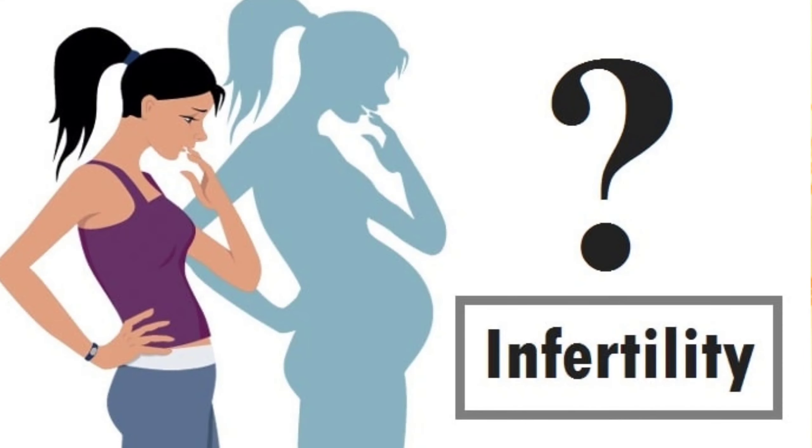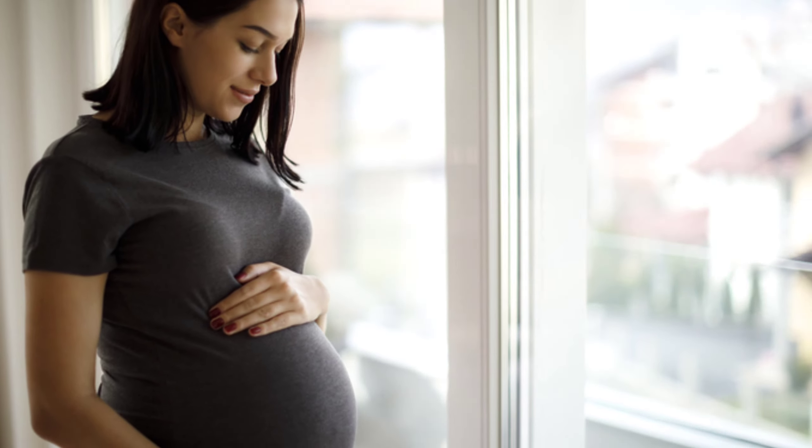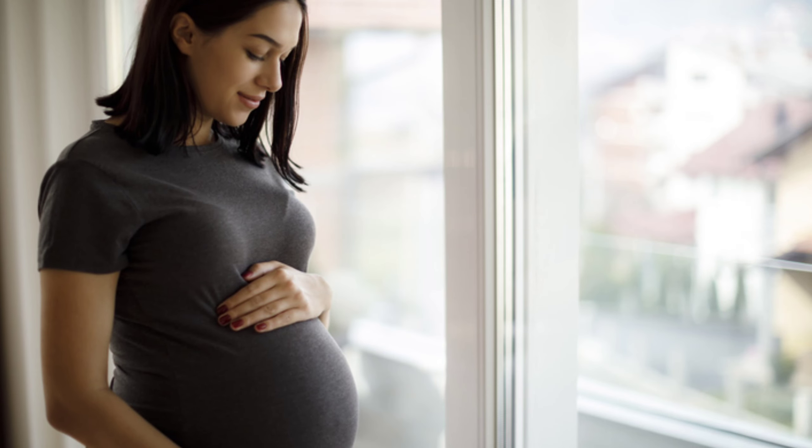It is estimated that around 15 to 20 percent of couples are infertile. Infertility means when a couple is having unprotected sexual intercourse for at least one year but still they are not getting pregnant. In most cases, around 80 percent of couples the female will get pregnant by six months of unprotected sexual intercourse, and 90 percent by the end of one year.